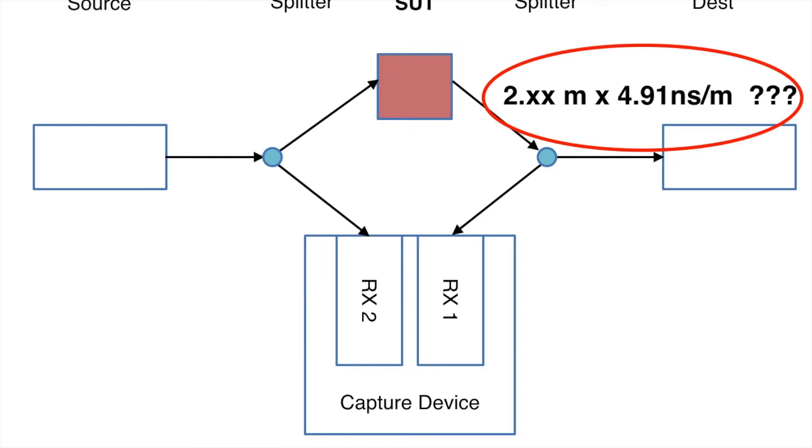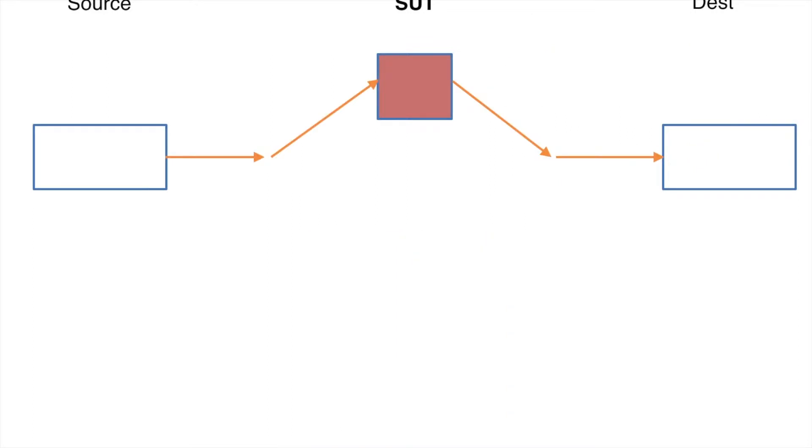The first step to doing this is to remove the optical splitters and the capture device. And the second step is to move towards using both transmit timestamps and receive timestamps instead of the pair of receive timestamps that we've been using so far. Now you can see that if we do this, we haven't actually eliminated all the errors in the system.